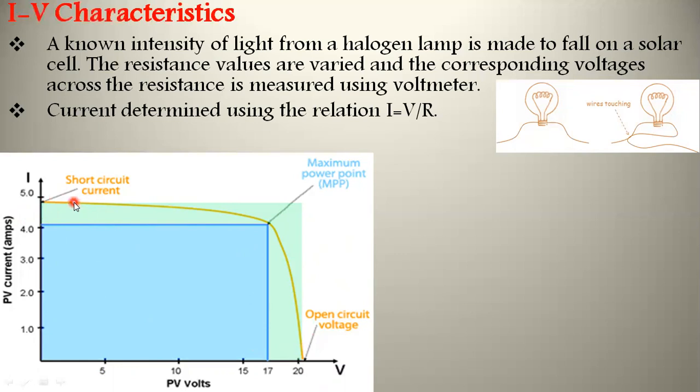By knowing both the voltage and current, the product always gives the power. We determine which set of coordinates gives the maximum power - that is the maximum power point. Using those coordinates, we draw the largest rectangle that gives the maximum useful power of the solar cell.